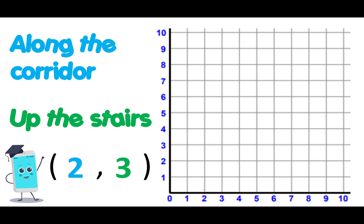So we move along the corridor first, and our first digit is 2. We always start at 0, which is called the origin. So we start at 0, and we move along to 2, and then we move up to 3. And that is that coordinate.